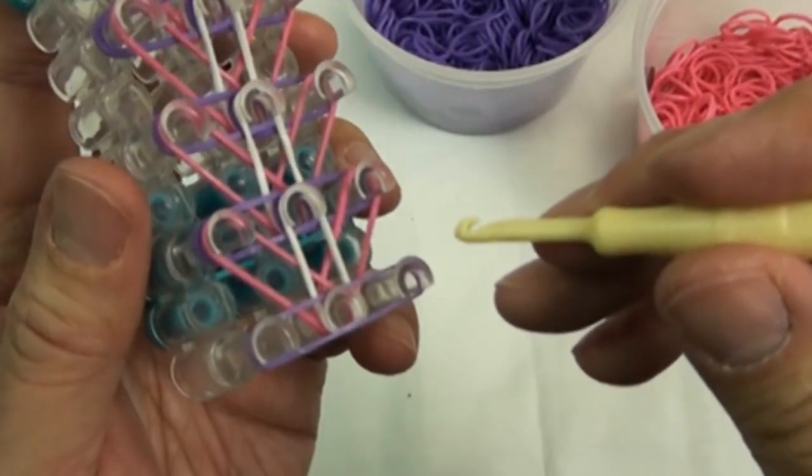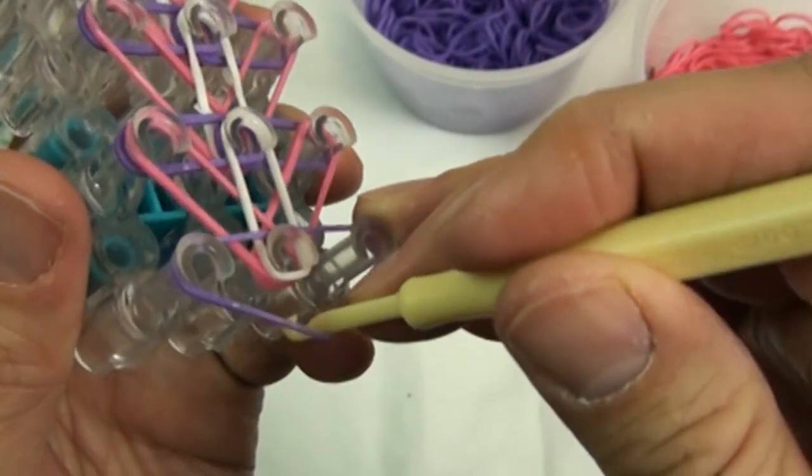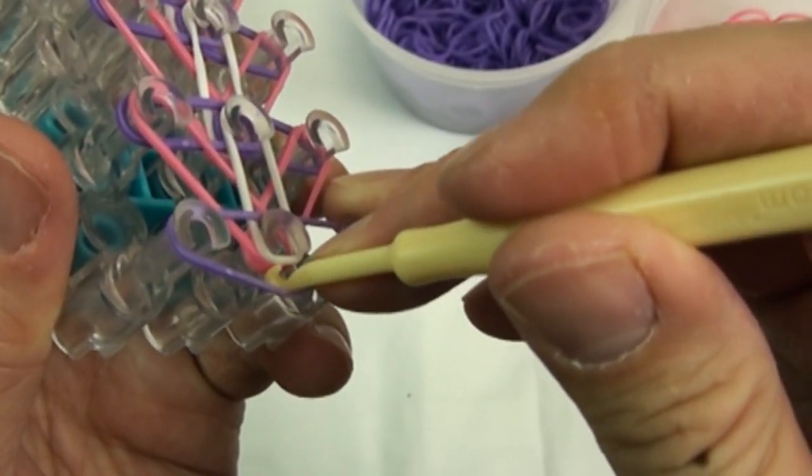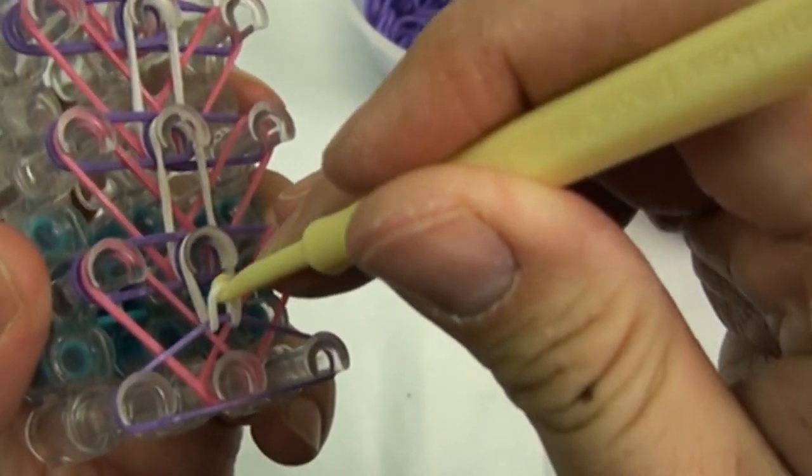I will now show you how to use the hook to loop the rubber bands. Pick the white rubber band from the bottom pin and pull it up and loop it over to the forward pin.